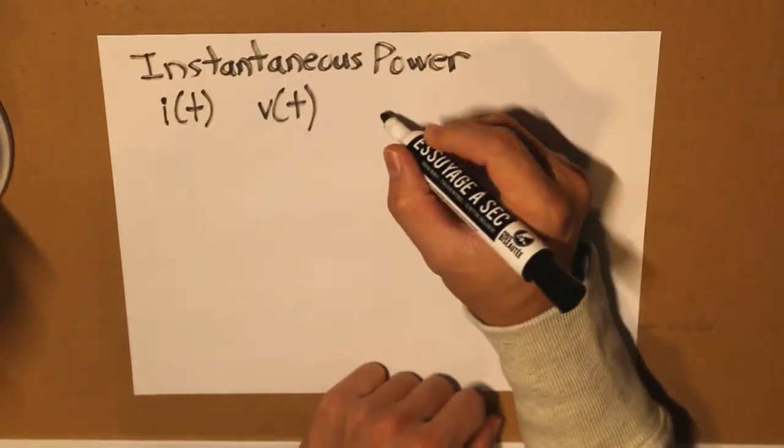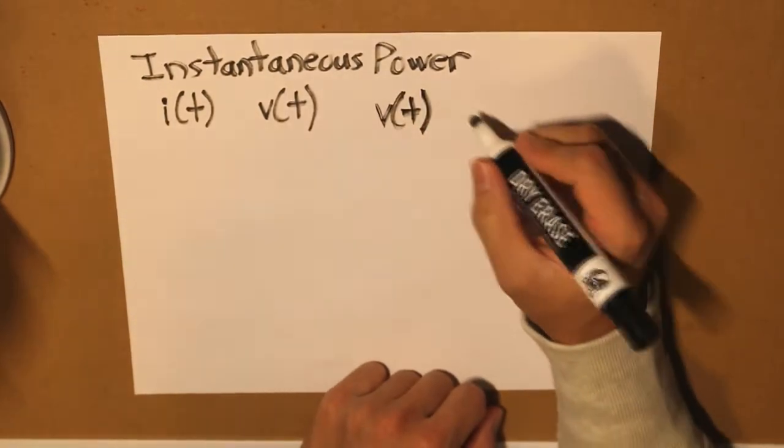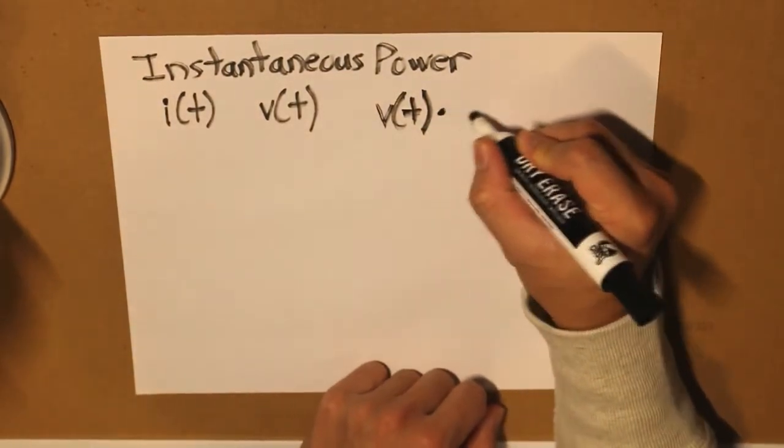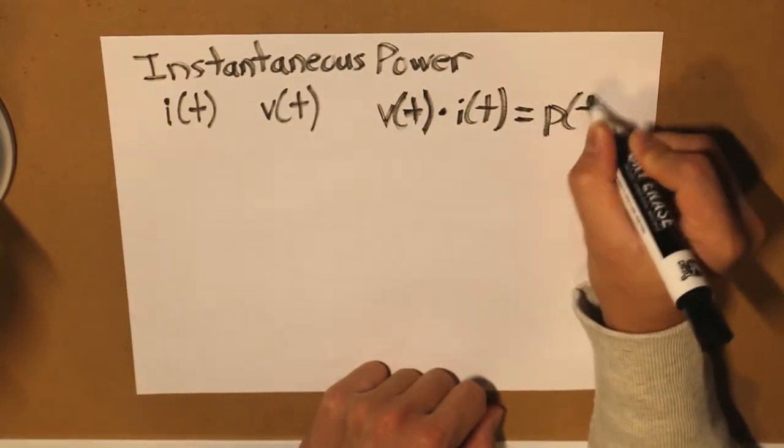So what we do is we take V(t), multiply that by I(t), and what we get is P(t). And this P(t) would be our instantaneous power.